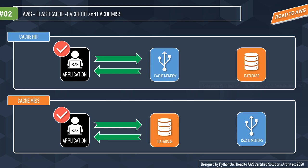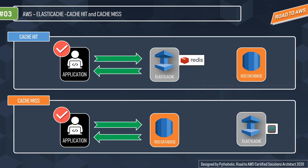If we look at this from the ElastiCache perspective, just replace the cache with your ElastiCache — which can be Redis or Memcached — and it works exactly the same way. The same cache hit and cache miss principles apply; it's just the replacement of the actual cache layer with ElastiCache.